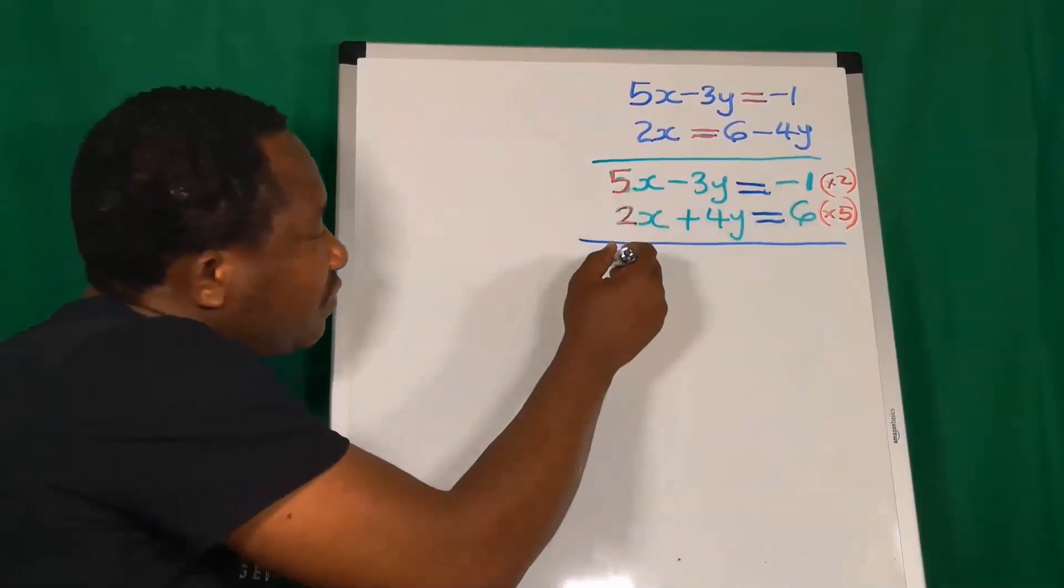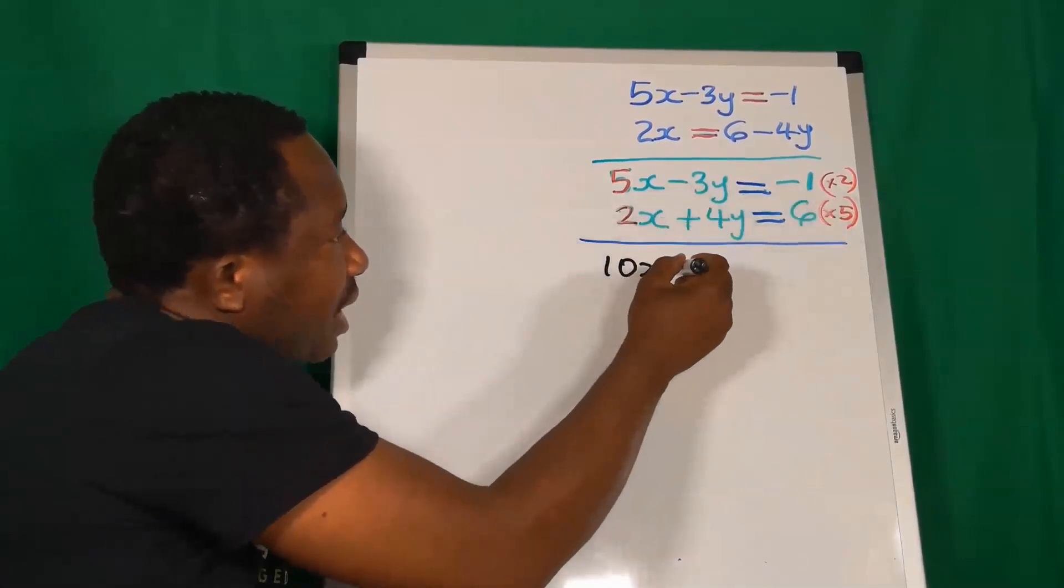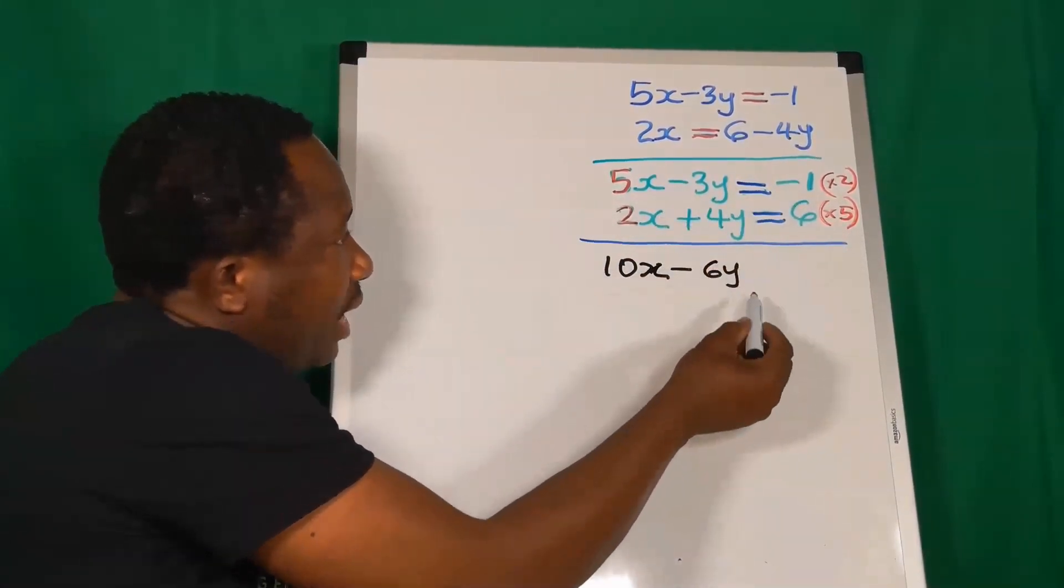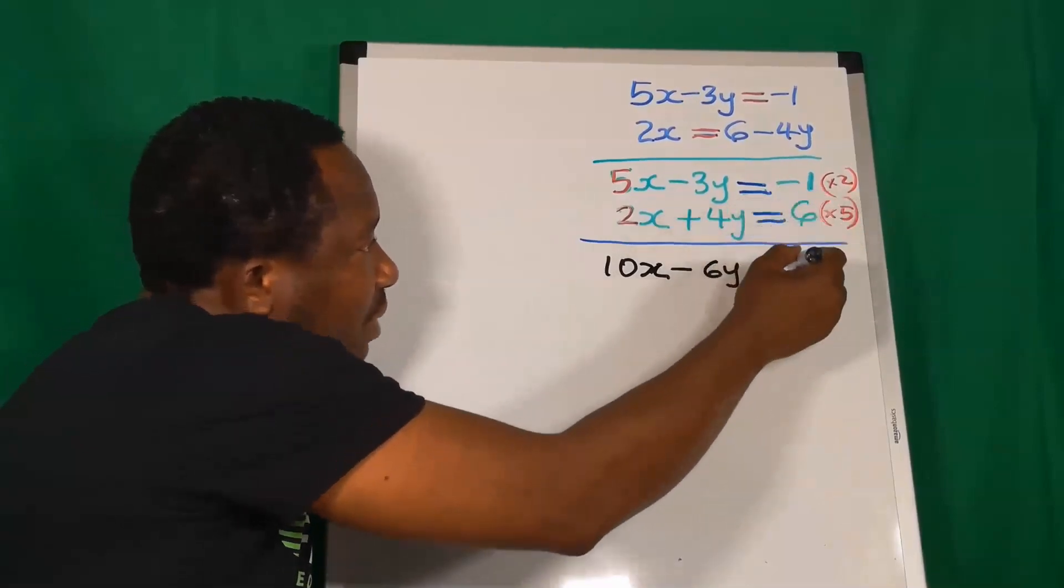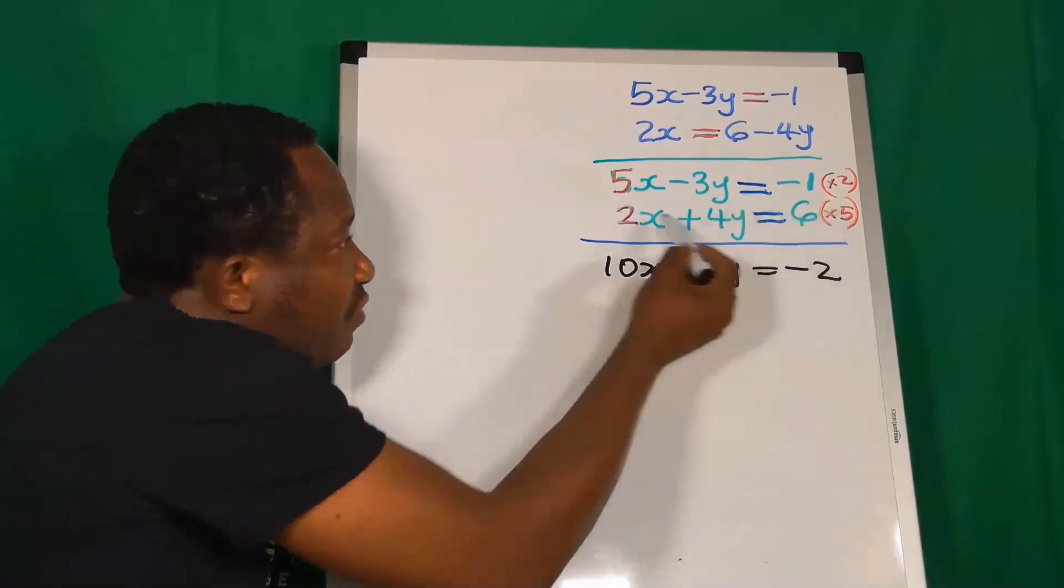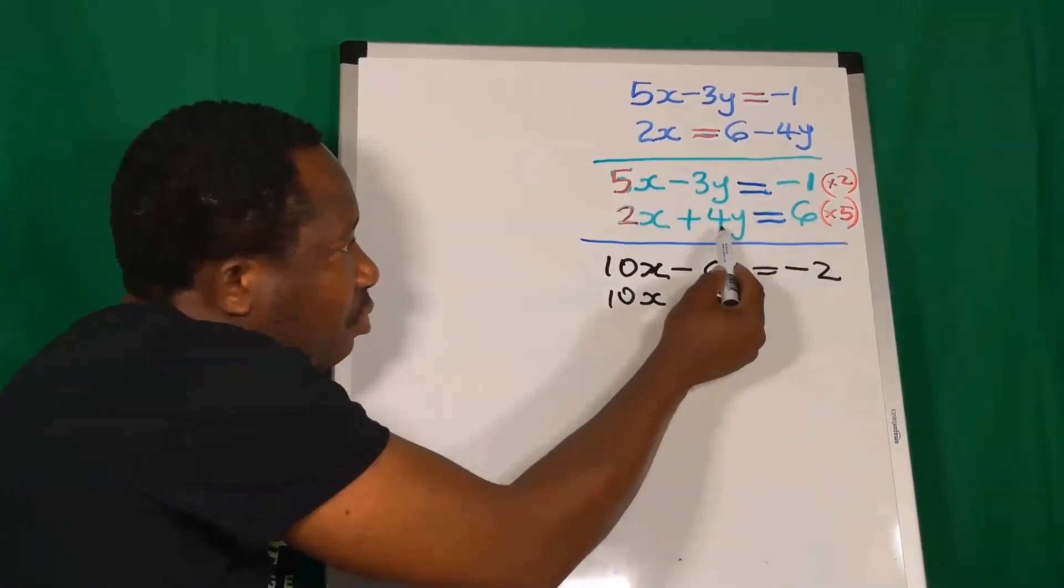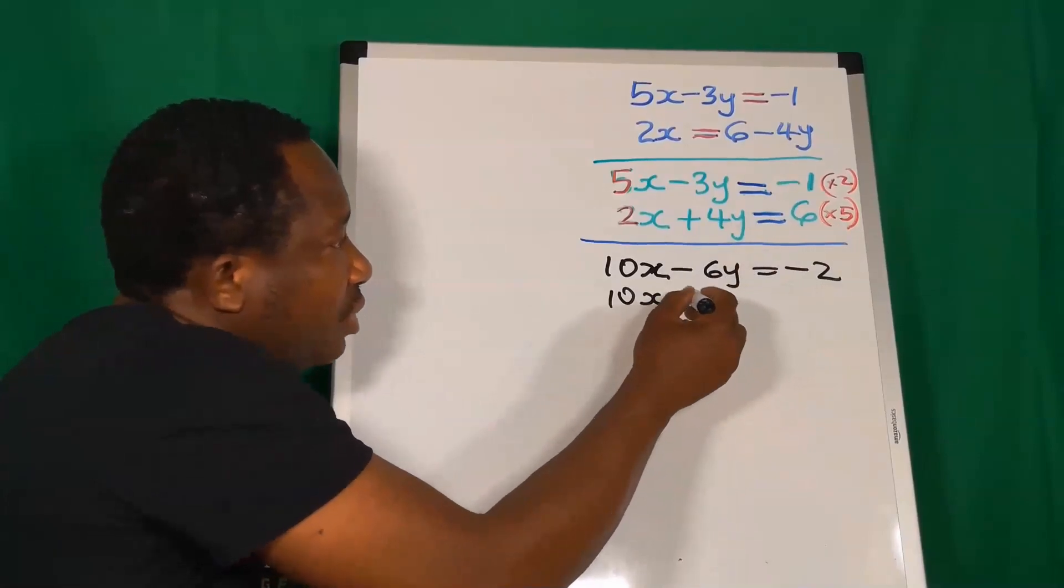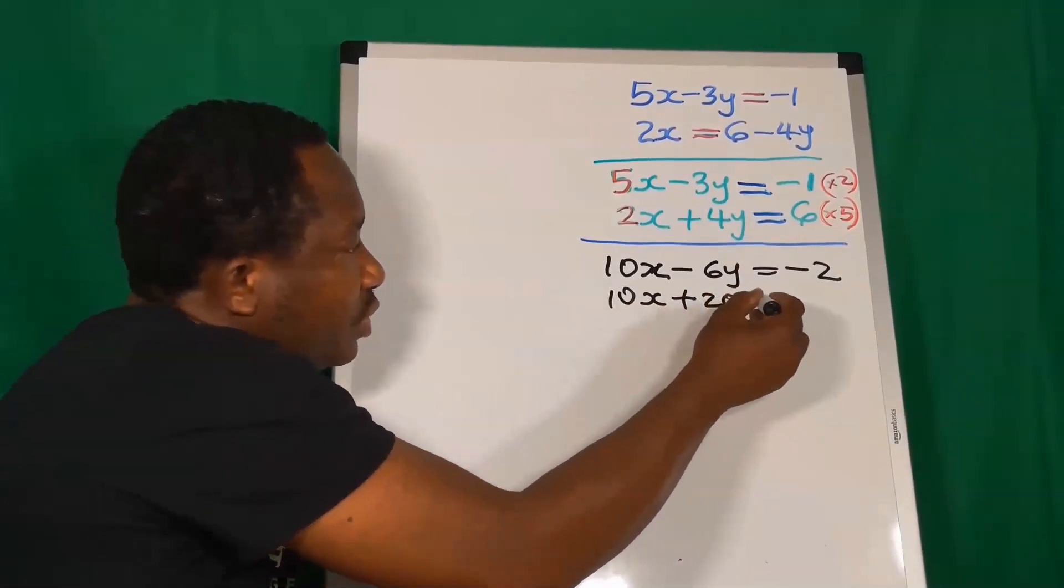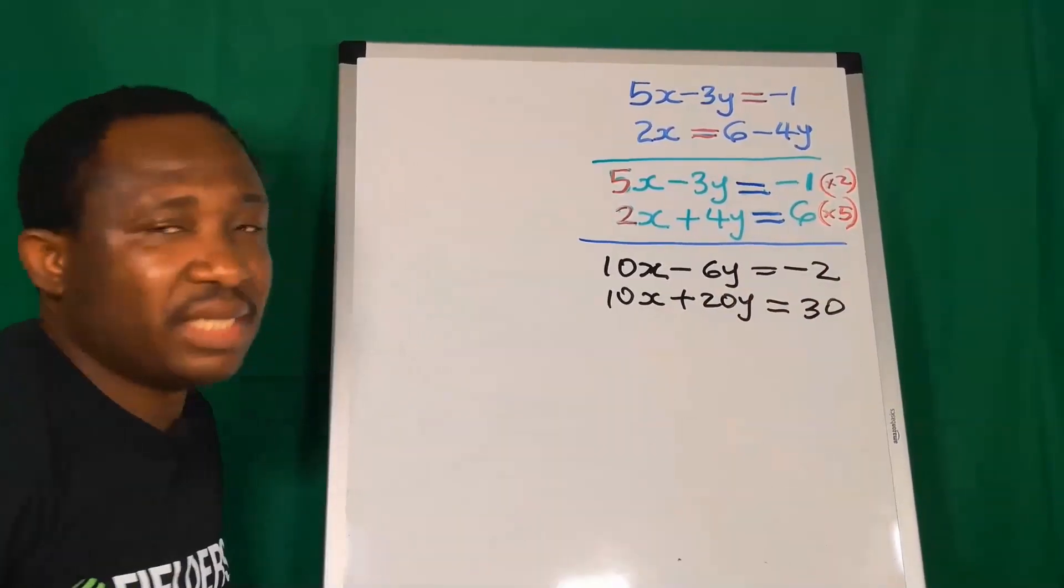2 times 5 is 10x. 2 times minus 3 is minus 6y. 2 times minus 1 is minus 2. 5 multiplied by 2 will give you 10x. 5 multiplied by 4y will give you plus 20y. And 5 multiplied by 6 will give you 30.